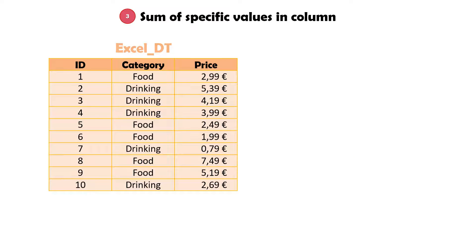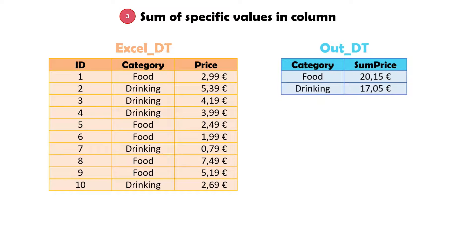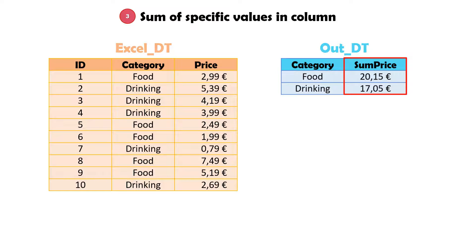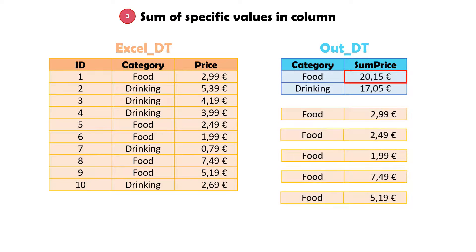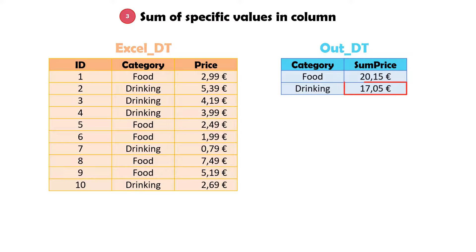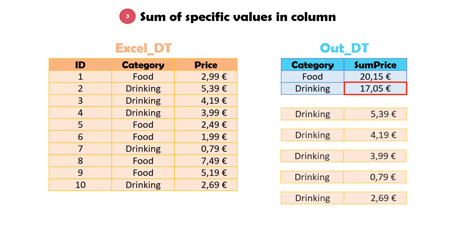I want to get as result the following table. This table consists of two columns: category and sum price. The category column should contain all categories from the first table — in this case we have only two categories. The sum price column should contain the sum of all numbers for each category. This means this number in the first row is the sum of all rows for food, and the second row contains the sum of all rows for drinking.